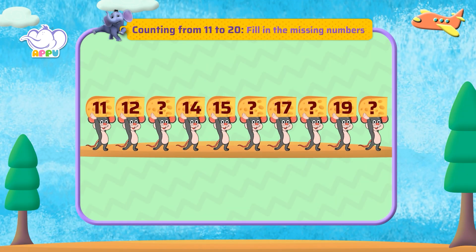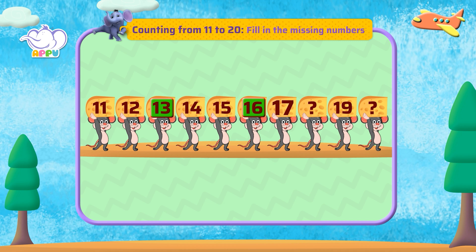Fill the numbers that are missing on the cheese slices. 11, 12 — what comes after 12? 13, 14, 15 — what comes after 15? 16, 17 — what comes after 17? 18, 19 — what comes after 19? 20.